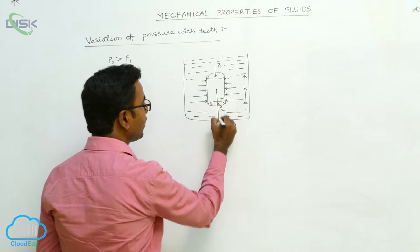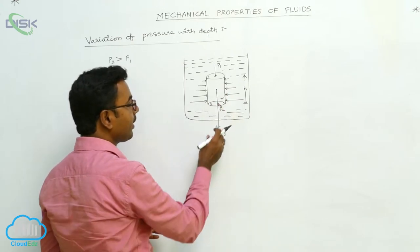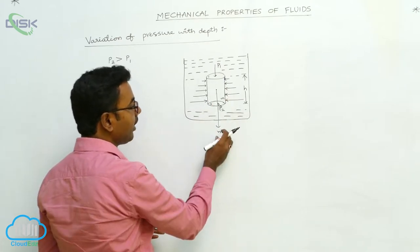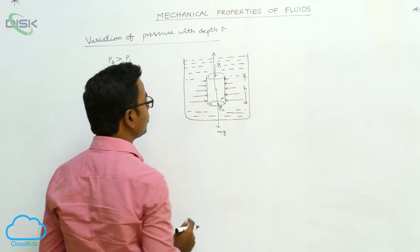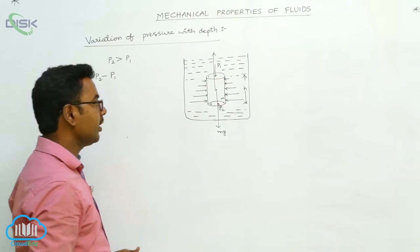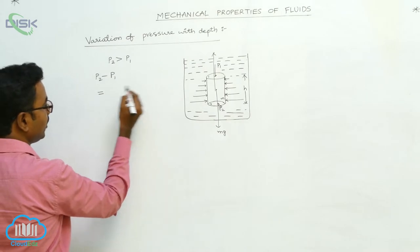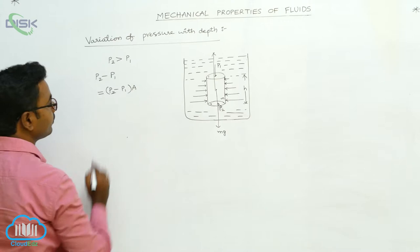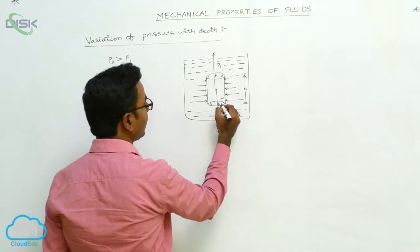For the cylindrical part, if mass is M, its weight Mg acts vertically downward. Even though Mg acts downward, this cylindrical part is not moving down, meaning it experiences an equal upward force. This equal upward force arises due to the pressure difference. The equal upward force is given by P2 minus P1 multiplied by A, where A is the area of each face.